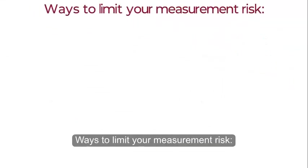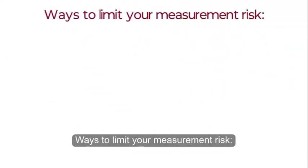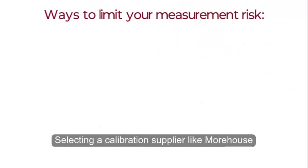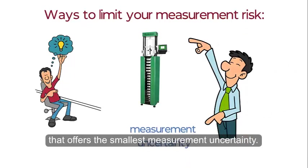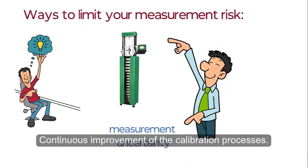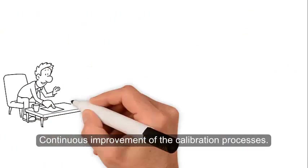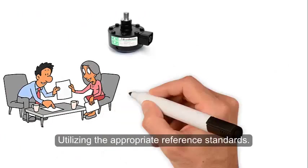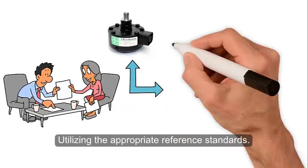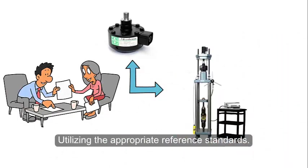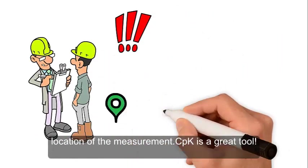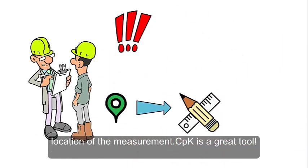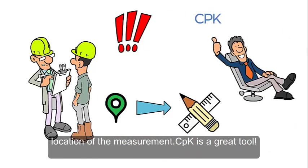Ways to limit your measurement risk include: selecting a calibration supplier like Morehouse that offers the smallest measurement uncertainty, continuous improvement of the calibration process, utilizing the appropriate reference standards, and calculating measurement risk with respect to the location of the measurement. CPK is a great tool for this.